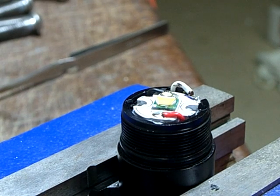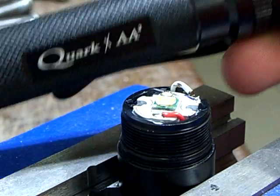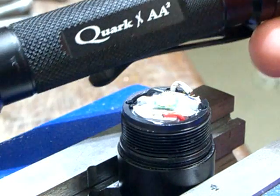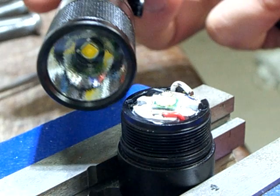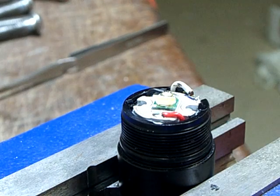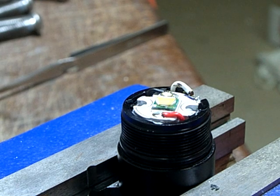How to upgrade the LED of a flashlight. I will be using this Quark XAA or AA2 flashlight. It looks like this and is a little older, so it is equipped with an XML LED from Cree.